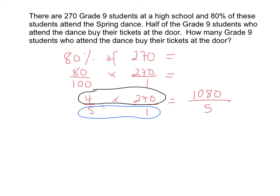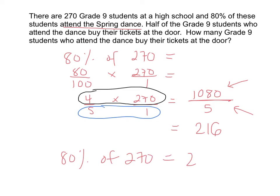We have an answer that is an improper fraction, meaning that the numerator is greater than the denominator. So how do we reduce this? 1,080 over 5 also means 1,080 divided by 5. How many times does 5 go into 1,080? 1,080 divided by 5 gives us 216. That means that 216 students attend the spring dance — 80% of 270 is equal to 216.